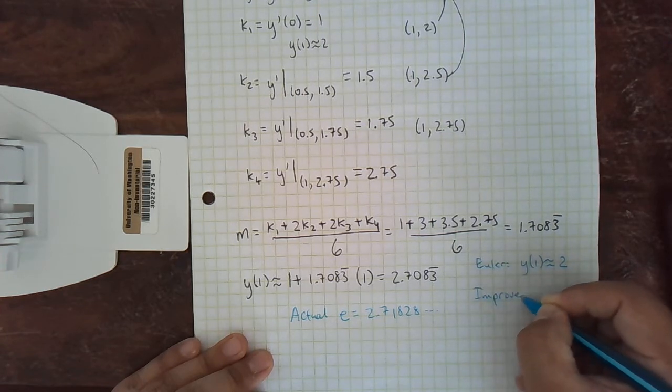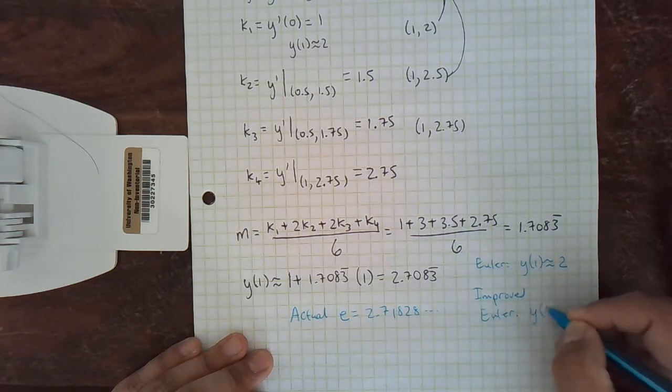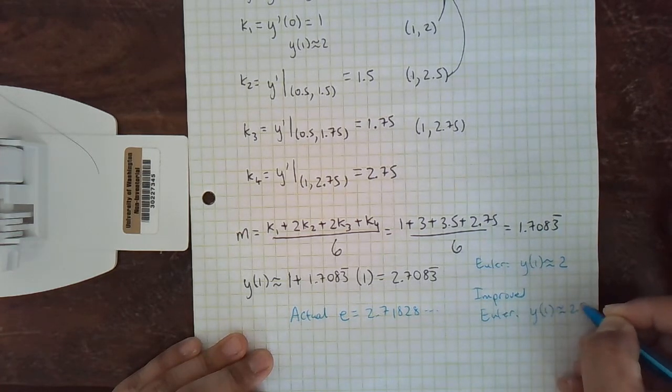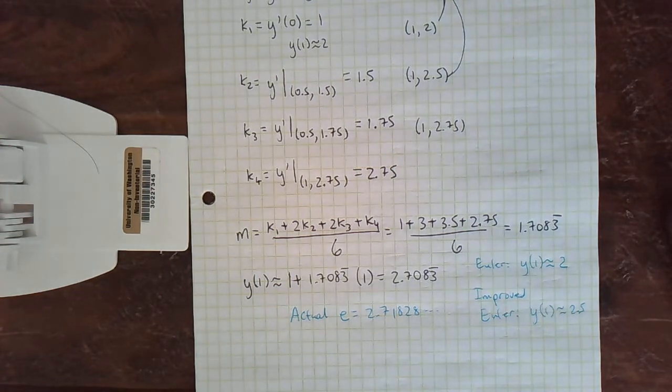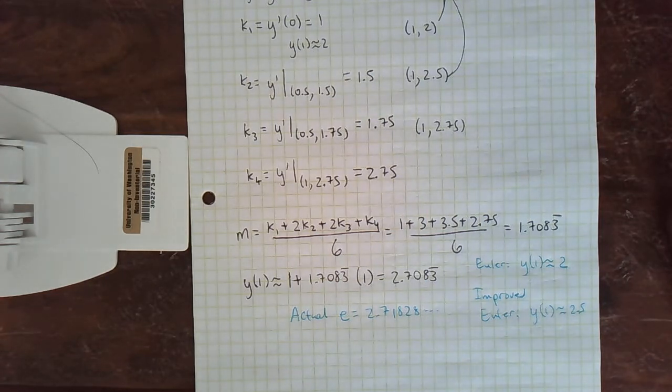Our improved Euler. We had y(1) was approximately 2.5. That was still 0.2 off. Here, our RK4 method, we are off by less than 0.01. So that's significantly better.